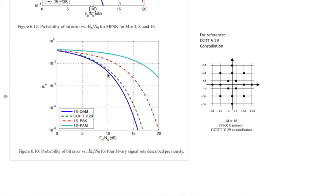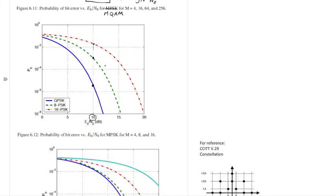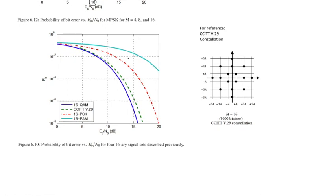Again, for an Eb over N0 of 10, the Eb over N0 is, you know, something like 10 to the minus 3.